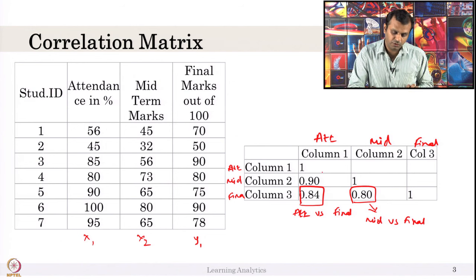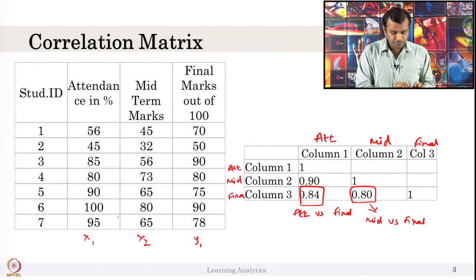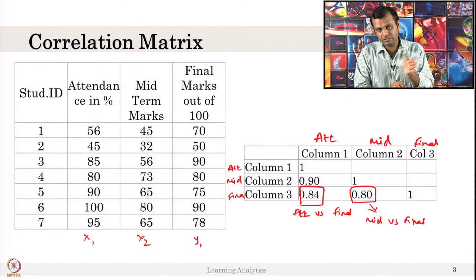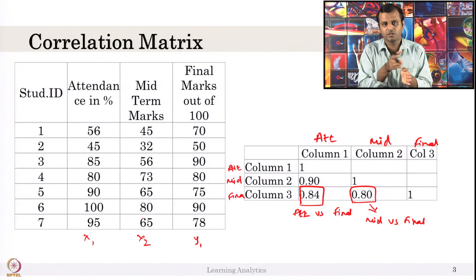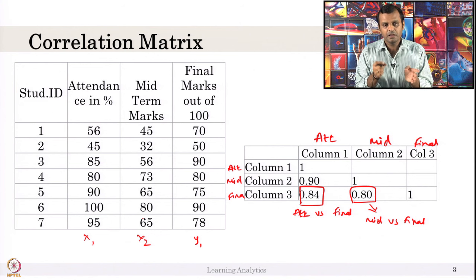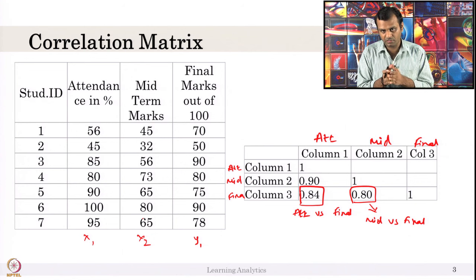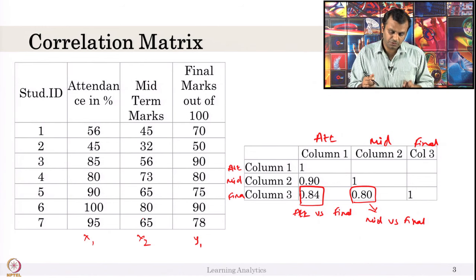What about the correlation between attendance and midterm? This may not be perfectly correct because midterm would have been done in the first half of the semester. Attendance data could cover until just before the final exam, or only the first half of the semester. But given the assumption that attendance is recorded only up to midterm time, attendance and midterm marks have a high correlation of 0.9.